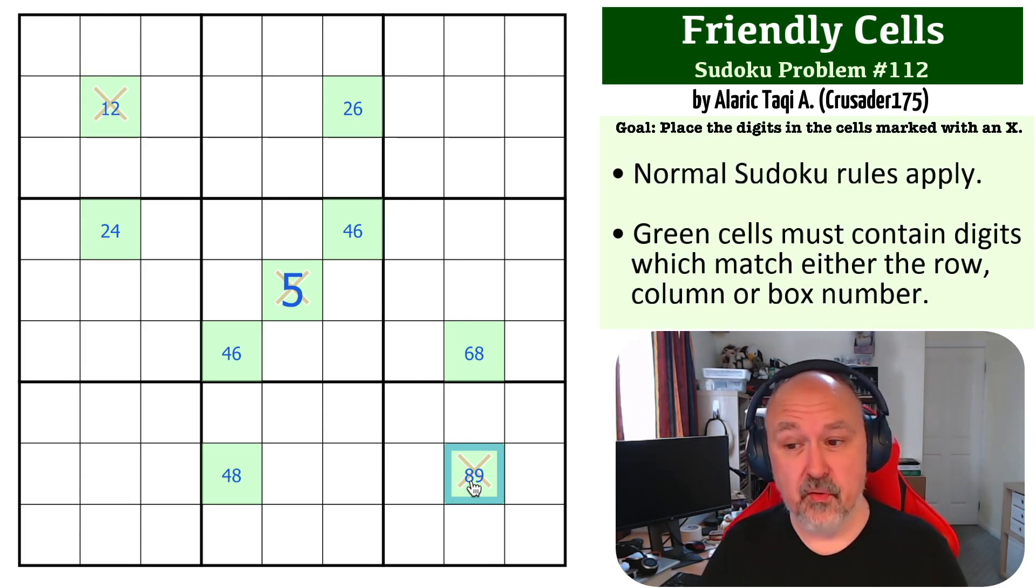Now what we're looking for, and this is why this has been flagged as a hard problem, is Y-wings, which is a classic Sudoku trick. What we want to do is ask ourselves what happens if this is a 2. If this is a 2, this becomes a 6 because it's a 2-6 pair. This becomes a 4 because the 2 makes this a 4. And this is a 6 and this is a 4, and that means this cell has no fill. This is what's called a Y-wing.